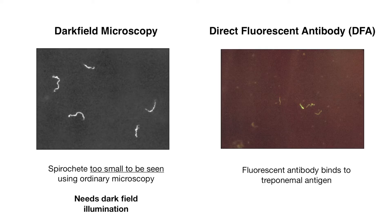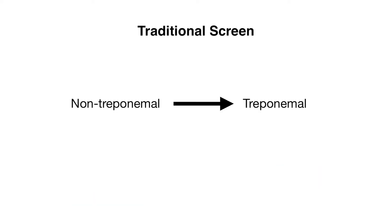Now we'll briefly review two non-serologic tests. These tests are done on biopsies of active lesions like chancres. The spirochete is actually too small to be seen using ordinary microscopy, and so on dark field microscopy you can see the spirochete — the spiral-shaped organisms — on dark field illumination. Another test is the direct fluorescent antibody, where fluorescent antibodies bind to treponemal antigen giving them a bright green appearance.